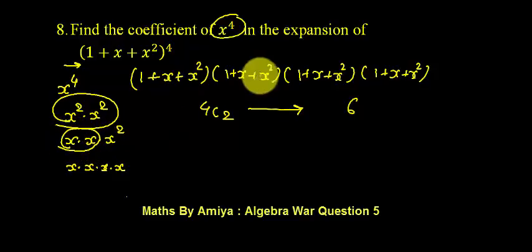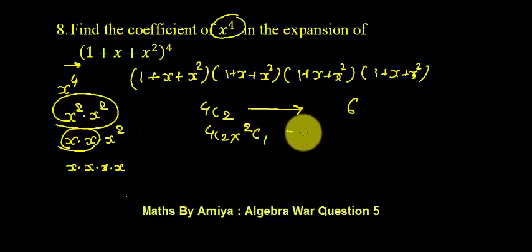We have two of the same type, that means out of four brackets we have to select 2 x terms, that is 4C2. And the remaining two brackets, we want 1 x² term. That is 4C2 into 2C1, which is 12.